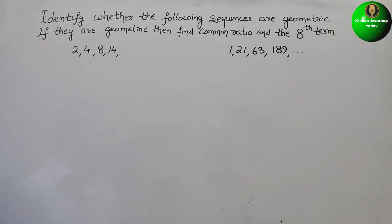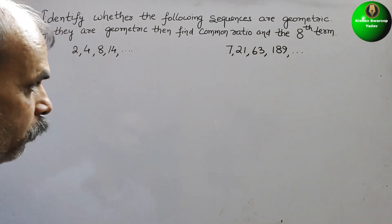Now, first we have to find it out whether they are in GP or not. How we will find it out? We will take the ratios.